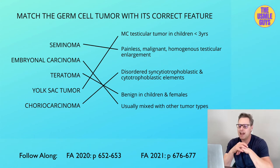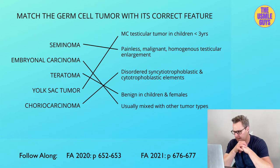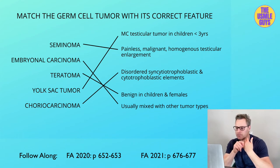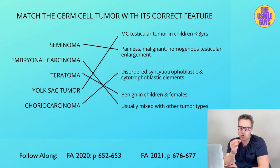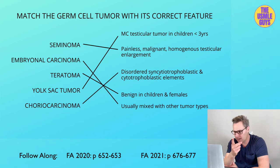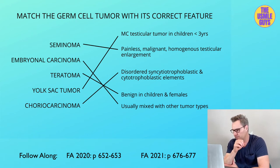Next up is the embryonal carcinoma. This is a malignant, painful hemorrhagic mass with necrosis. It's important to note that you rarely see this on its own — rather, it's going to be mixed with another type of tumor. Pay close attention to the labs: if HCG is elevated but AFP is normal, that indicates a pure embryonal carcinoma. However, if both HCG and AFP are elevated, that indicates a mixed tumor. This does not have a great prognosis.